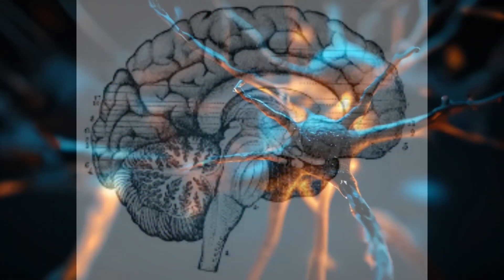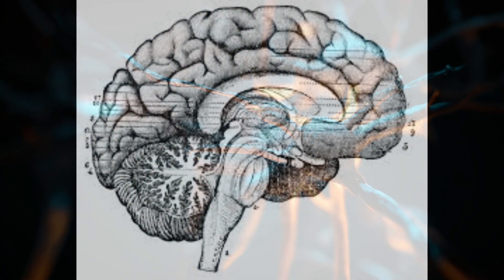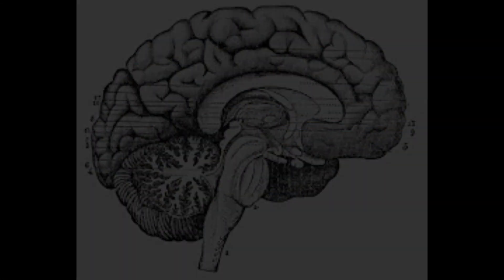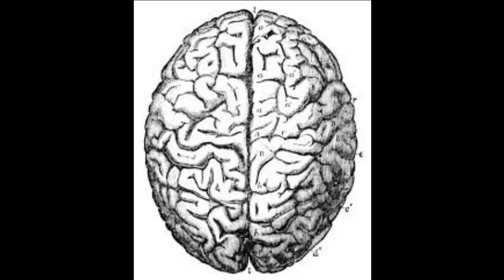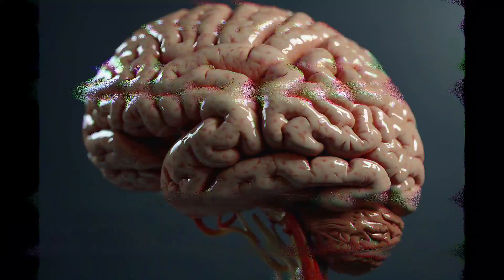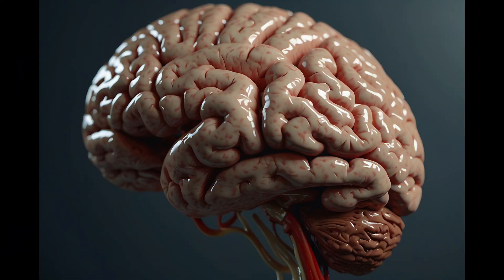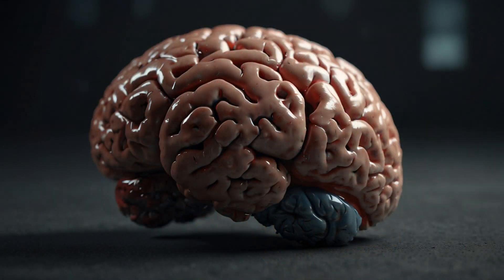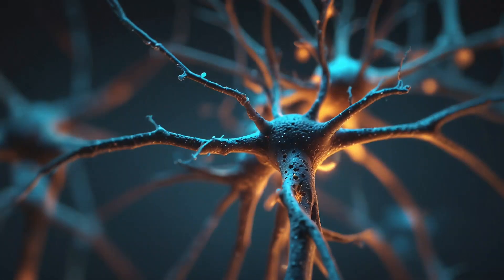Throughout our lives, our brains undergo constant changes as we learn new skills, form memories, and navigate the world around us. This dynamic process of synaptic connections being strengthened or weakened, known as synaptic plasticity, allows the brain to encode and store information, shaping our thoughts and behaviors over time.